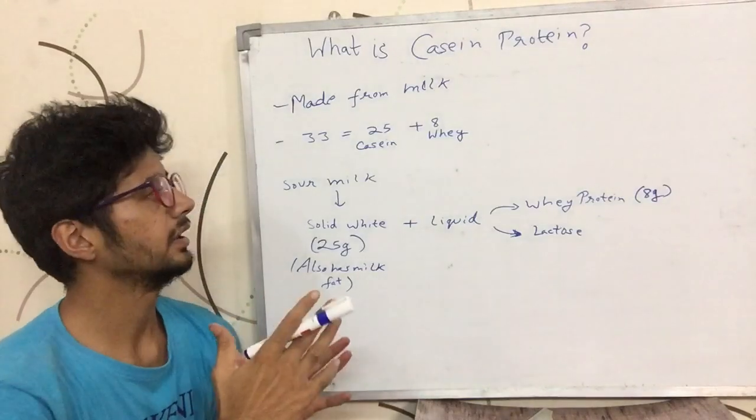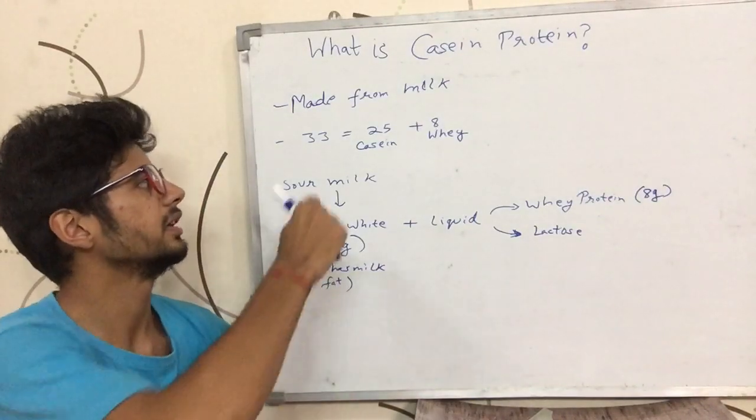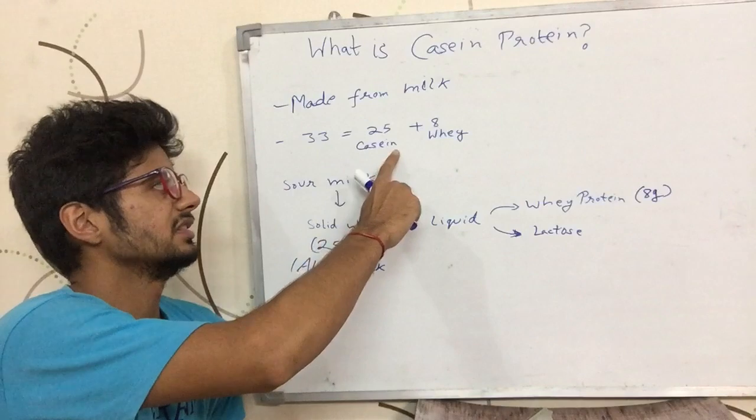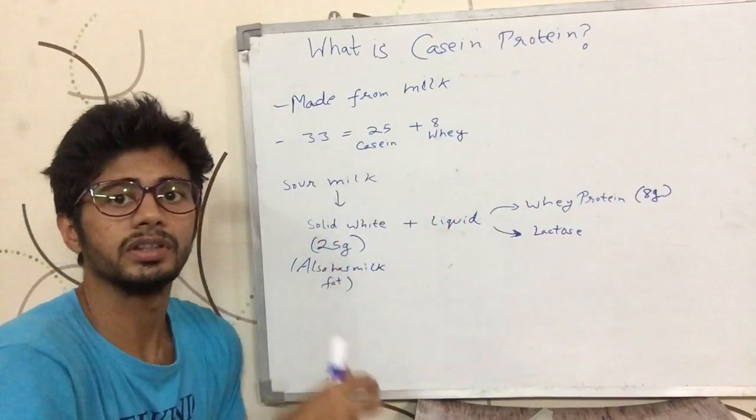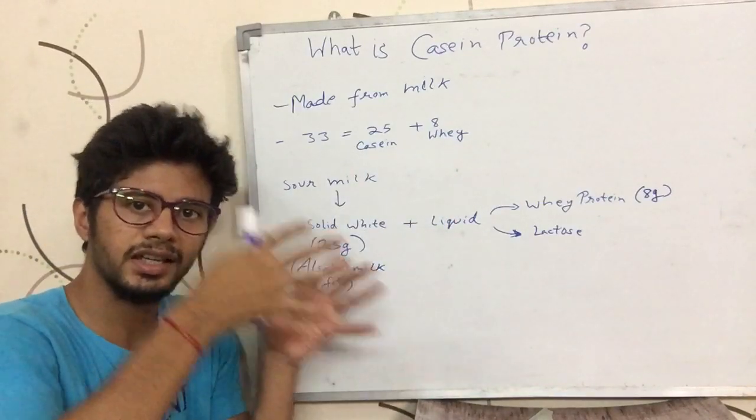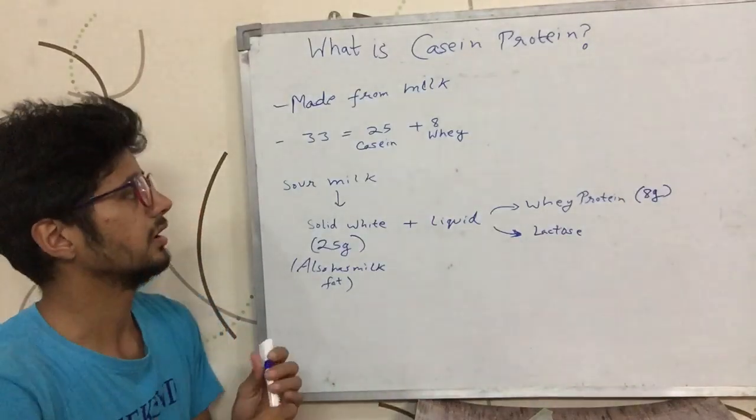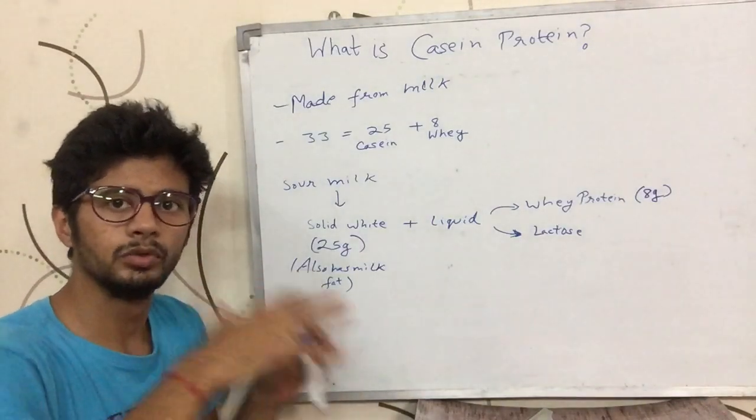Casein protein is made from milk. In one liter of milk, you have about 33 grams of protein, which includes 20 to 25 grams of casein and 8 grams of whey protein. Casein protein is the solid protein that forms when milk curdles. Whey protein is also a protein found in milk.